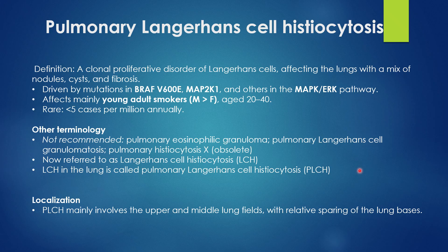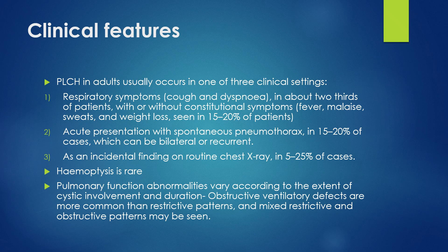PLCH mainly involves upper and mid lung fields with relative sparing of the lung bases, which may help in differentiating it from other interstitial lung diseases presenting with fibrosis. PLCH can present in three clinical settings: with respiratory symptoms like cough and dyspnea, with or without constitutional symptoms like fever, malaise, and weight loss; acutely with spontaneous pneumothorax, which may be bilateral or recurrent; or as an incidental finding on routine chest X-ray.